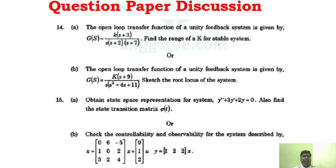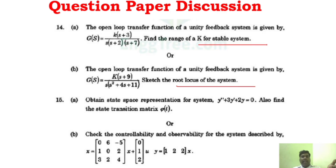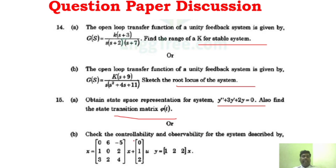Unit 4: root locus — find the root locus, then determine stability of the system and K-value, using either Routh criterion or Nyquist criterion. Root locus and K-value problems are the default focus. Unit 5: differential equations, transition matrix, and definitely a problem on controllability and observability. Controllability and observability problems are very very important in Unit 5.